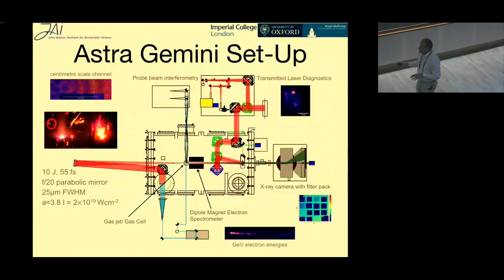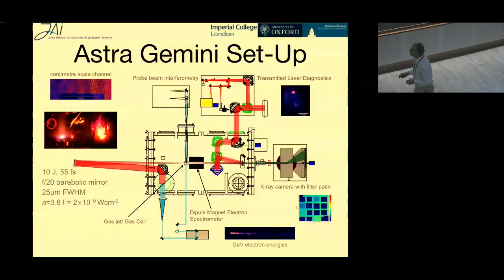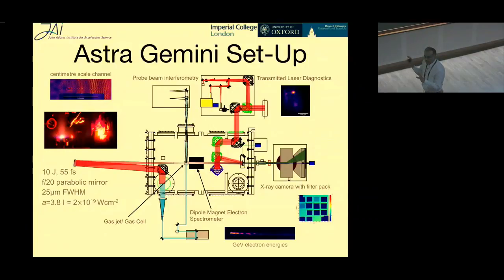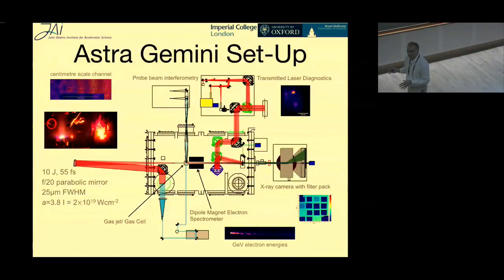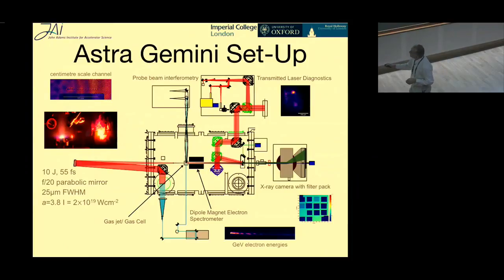To study that kind of experiment, we use the Astra-Gemini laser, which Rajiv is responsible for — so everything that goes wrong, we go to him first and shout at him, sorry Rajiv. We typically get five-week runs on this experiment; unlike Dino, we don't have full-time access. We set up and tear down the experiment in four or five weeks. The interaction chamber has a target — a gas jet, or increasingly a gas cell, which is just a box filled with gas where we can easily change the length.